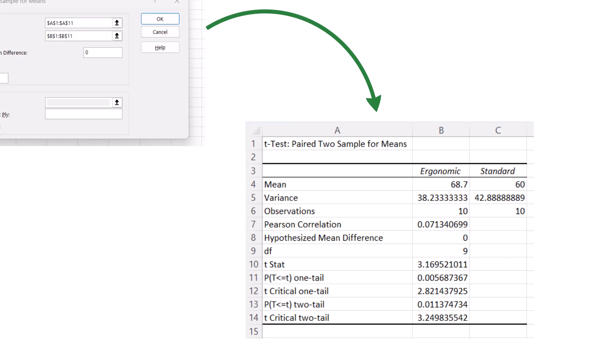It gives you the mean of both populations, the variance, the number of observations or the sample size, which is 10 for both samples. It gives us the Pearson correlation coefficient, which we'll learn about in chapter 14. Here is the hypothesized mean difference because we hypothesized that there's no difference between the populations. The degrees of freedom is 9, which matches what we calculated previously. The t-stat of 3.17 is the test statistic that we use to compare against the critical value. So you can see we are working with a very similar output to the t-test for independent samples. It also gives us the p-values and t-critical values for one and two-tailed tests.